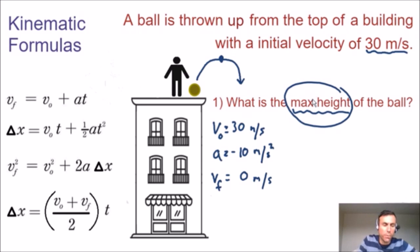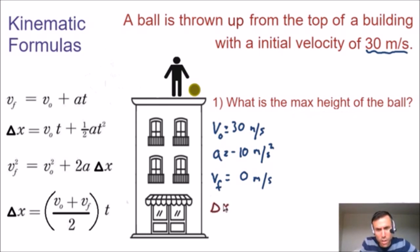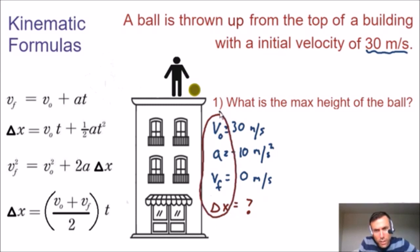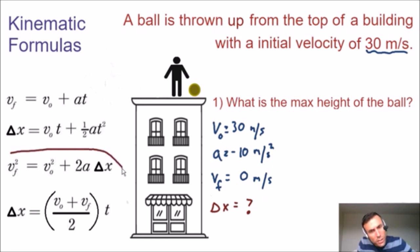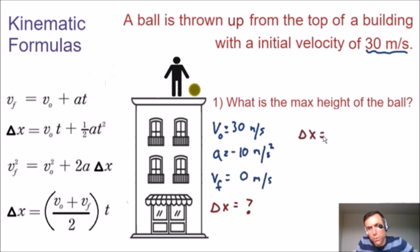Now we have our three knowns and can solve for what we're looking for — the max height, or displacement delta x. Looking at our kinematic formulas on the left-hand side of the screen, the third equation has all four unknowns present in our problem, and we are solving for delta x. Rearranging that equation: delta x equals the final velocity squared minus the initial velocity squared, all divided by two times the acceleration.